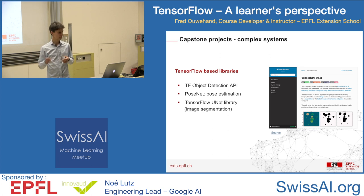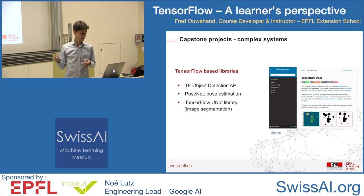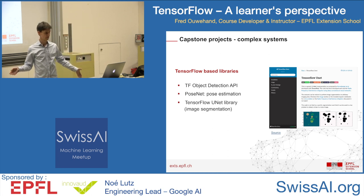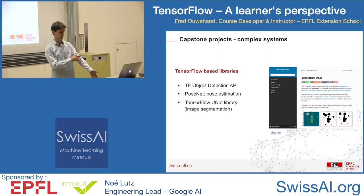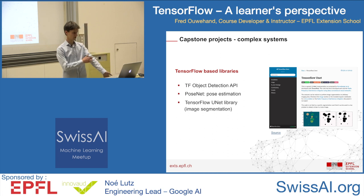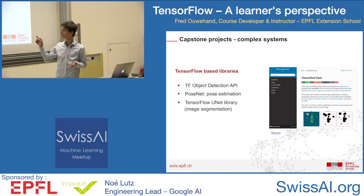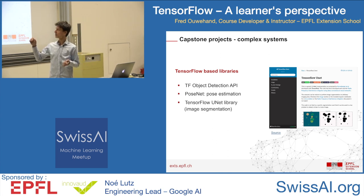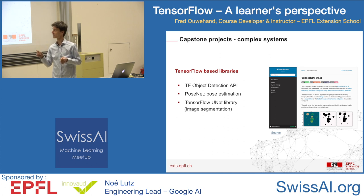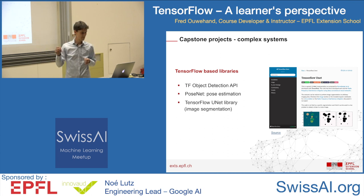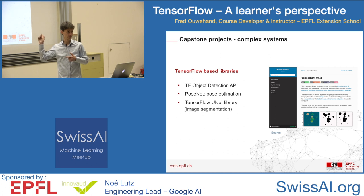Just to mention a few: there is the TensorFlow Object Detection API, and PoseNet for pose estimation — based on a webcam feed, you can detect different skeleton coordinates and perform higher-level tasks. Also TensorFlow UNet, shown here, which is for image segmentation. Based on only a few labeled training images that the learner manually annotated in simple image software, they were able to do image segmentation on the Siegfried maps.